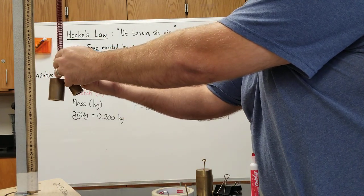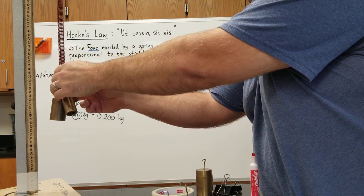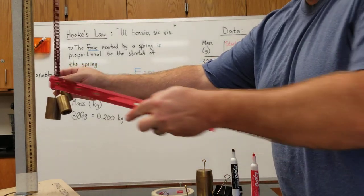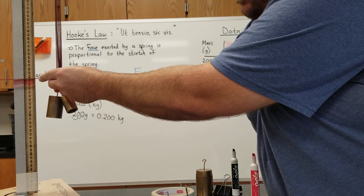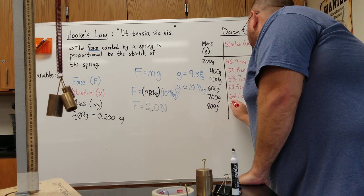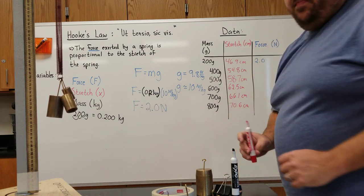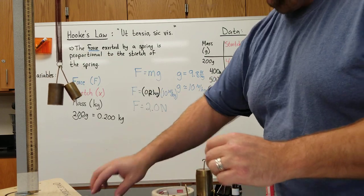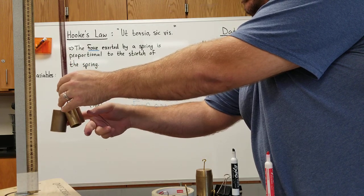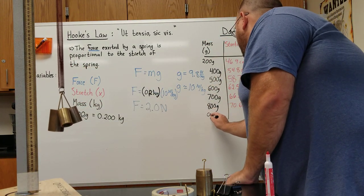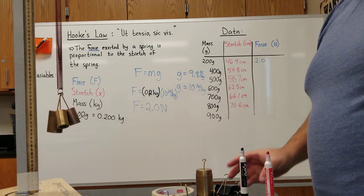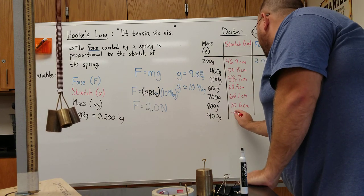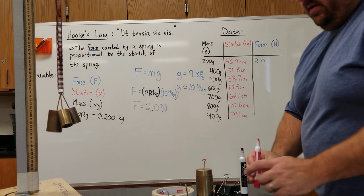Let's do two more. I can add the 100 back, so 500 plus 200 plus 100 would be 800. So when I do 800, that gives me a stretch of 70.6 centimeters. I can replace that 100 with another 200, so now I get 900 grams. So that would be 74.1 centimeters.